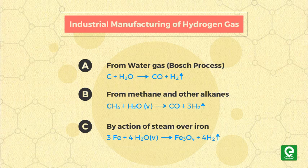Method C: by action of steam over iron. Passing steam over iron results in formation of ferric oxide and hydrogen gas. This brings us to the end of all the different methods used to produce hydrogen gas.